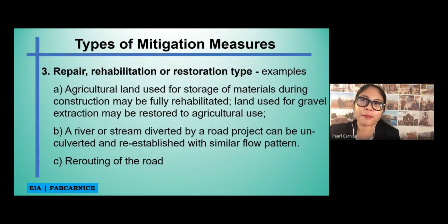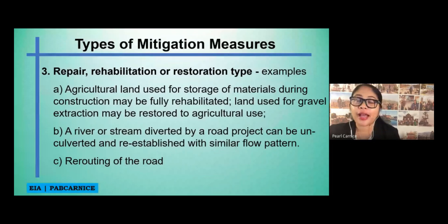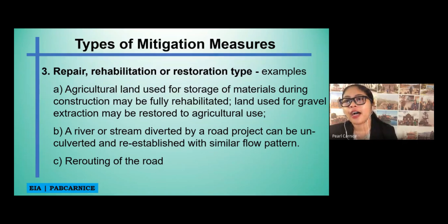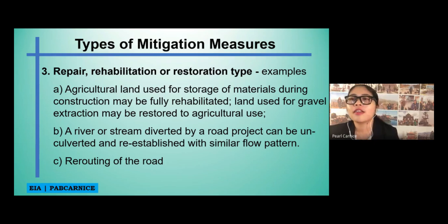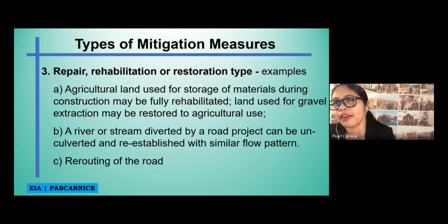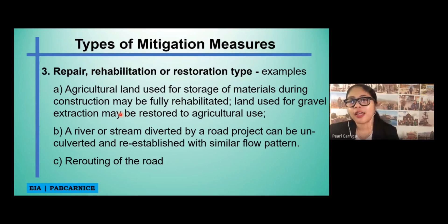The next example is the repair, rehabilitation, or restoration type of mitigation measures. For example, agricultural land used for storage of materials during construction may be fully rehabilitated, and land used for gravel extraction may be restored to agricultural use. If we can repair, rehabilitate, or restore a certain area affected by our project or activity, then we should do that. If we extracted gravel in a certain area and there is no gravel left, it would be best to restore it to agricultural use.